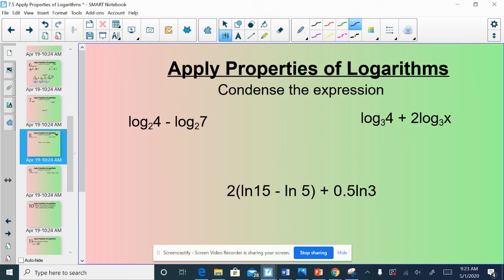Let's condense some things. This is going the other direction. Log base 2 of 4 minus log base 2 of 7. They both have base 2. And so this is a subtraction. When I condense it, it's going to be a division. So this would be log base 2 of 4 sevenths.